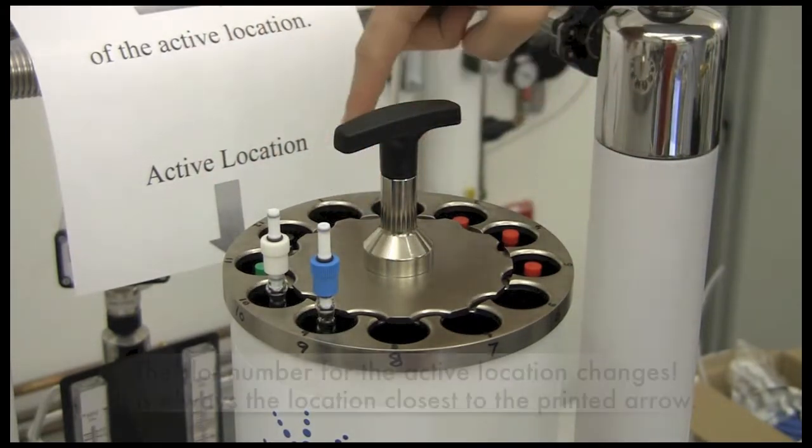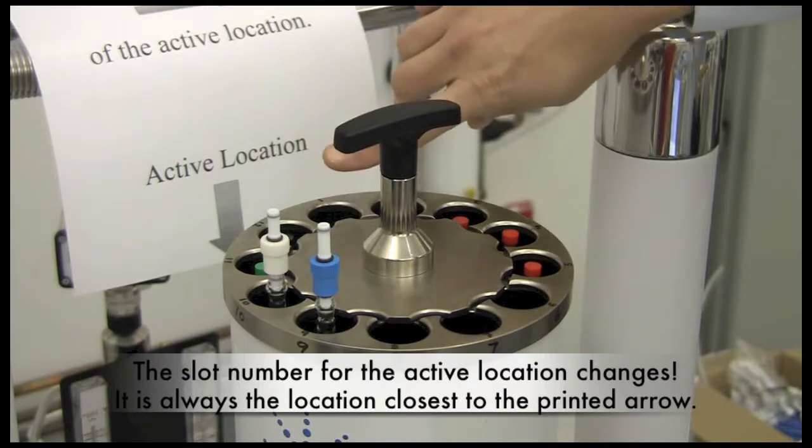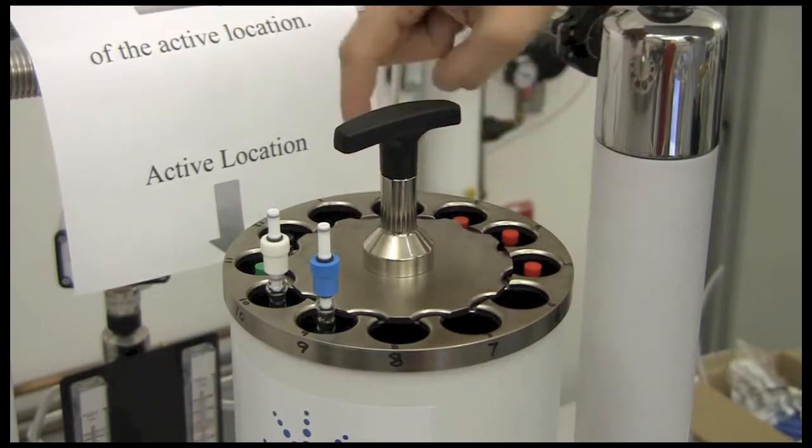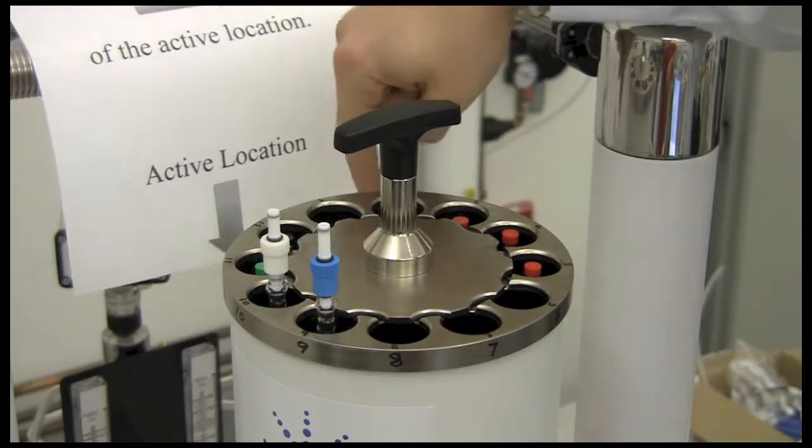The slot number 1 is the active location, and you should never put a sample in the active location because there may be a sample in there already inside the magnet.